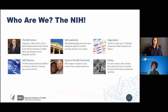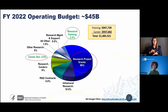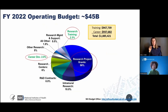NIH was founded in 1880 and we are the primary U.S. agency responsible for biomedical and health research. We are the largest public funder of biomedical research in the world. Last year in 2022, NIH had an operating budget of about $45 billion. A little under 5 percent was devoted to research training and career development awards. Almost 60 percent of the operating budget went towards funding more than 50,000 research project grants to more than 2,500 universities, medical schools, and other research institutions in every state.